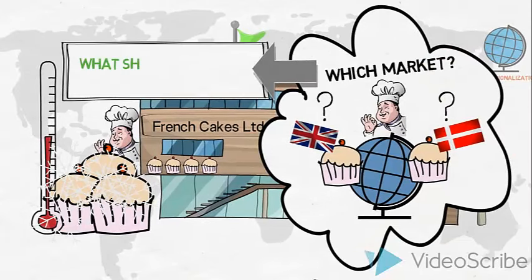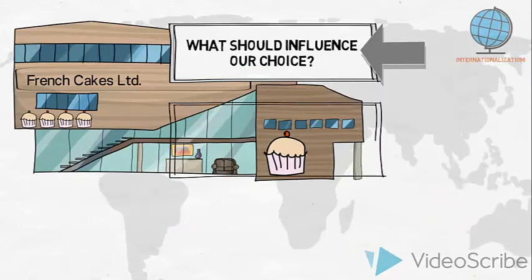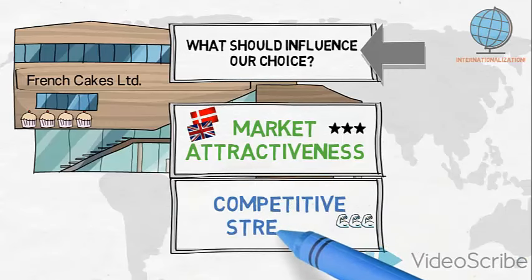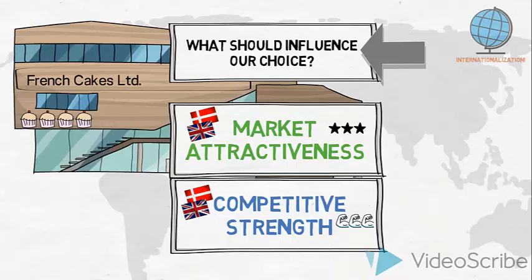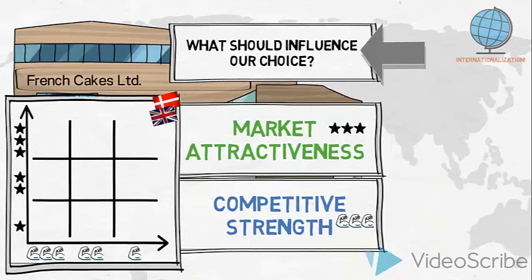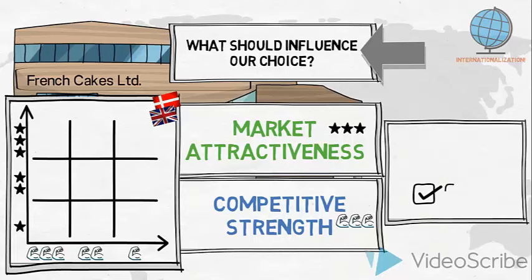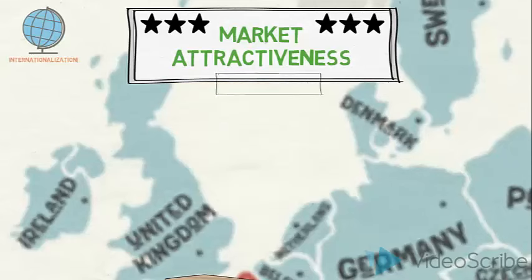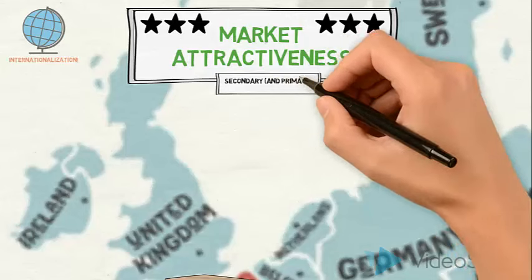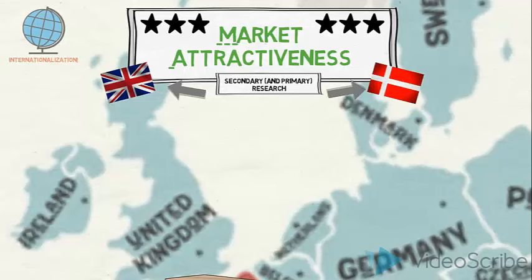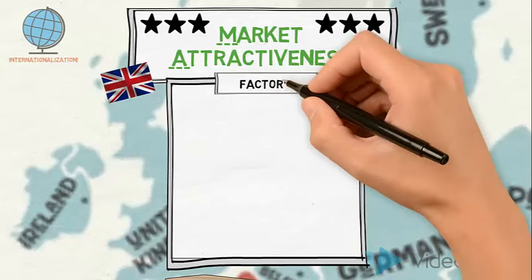So what should influence our choice between these two countries? Firstly, we will investigate the market attractiveness — how attractive each market is for French Cakes to enter. Secondly, we will investigate the company's competitive strength in each of the two markets. We will then plot the two markets into a matrix to provide an overview. Finally, we will look at French Cakes' internal situation to determine their capabilities to serve either market. We would conduct extensive secondary and primary research to compare the two markets' attractiveness.